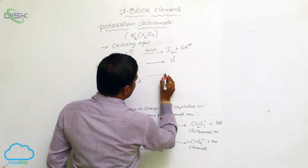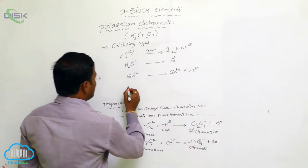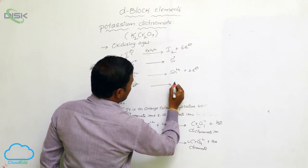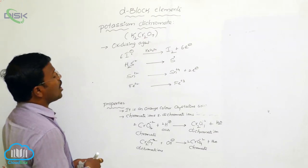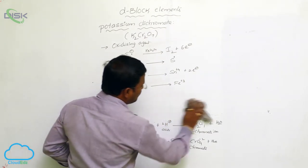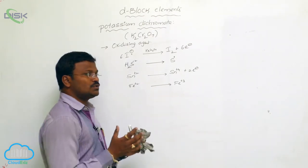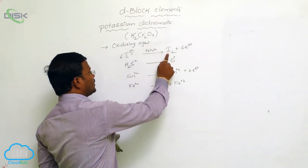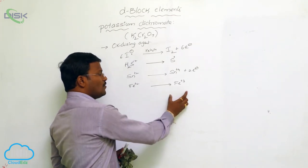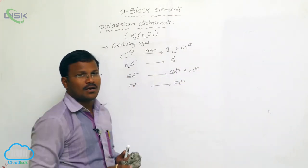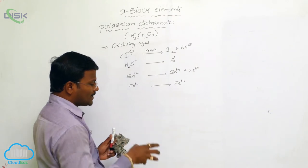Sn²⁺ is oxidized to Sn⁴⁺ with the release of 2 electrons. Similarly, Fe²⁺ ferrous ions are converted into Fe³⁺ ferric ions. These are the generalized oxidation reactions identified with potassium dichromate. Potassium dichromate is a strong oxidizing agent which oxidizes iodide ions to iodine, sulfide ions to sulfur, Sn²⁺ to Sn⁴⁺, and ferrous ions to ferric ions. These are all half-reactions where potassium dichromate participates in reduction.